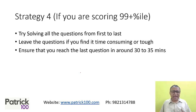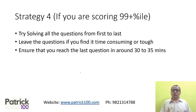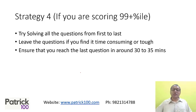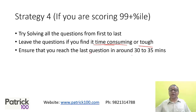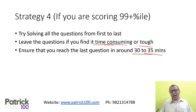Strategy four is for people aiming for more than 99 percentile. You basically try to solve all questions as and when they come, but learn to leave questions if you find them time-consuming or tough. People who score 99 percentile tend to solve more questions but leave very few, so the time lost on skipped questions is minimal. One of the biggest problems with strong students is they find it difficult to leave questions — learn to control that and leave time-consuming or tough questions. Ensure you reach the last question within 30 to 35 minutes. If you find a question tough or time-consuming, mark it, say you'll come back later, and return to it in the second round. If it's very tough, learn to leave it.